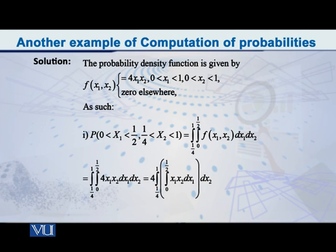For example, if we write it this way, integral 1/4 to 1, and after that the next integral 0 to 1/2, and after that f(x1, x2), which is 4x1x2. After that, carefully you have to write dx1 and dx2. Because you have written 1/4 to 1 in the first integral, these are your x2 limits.